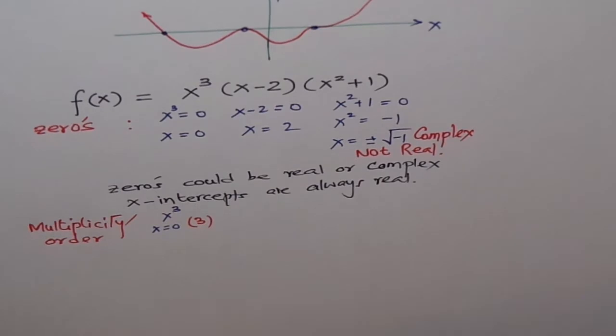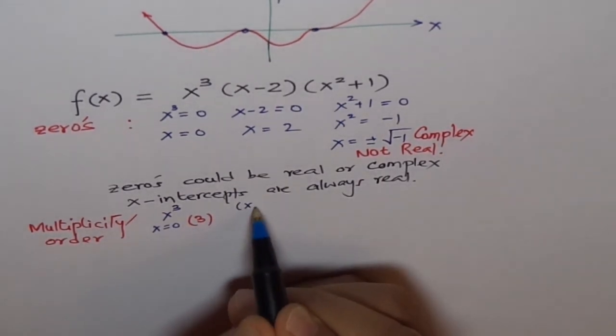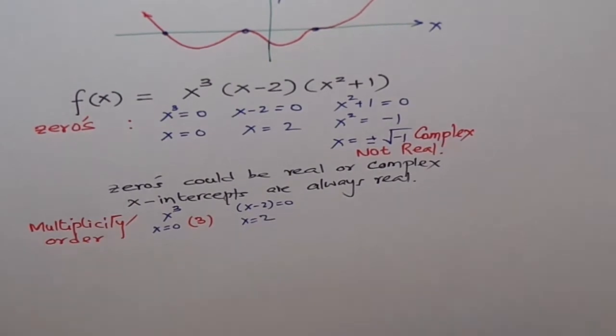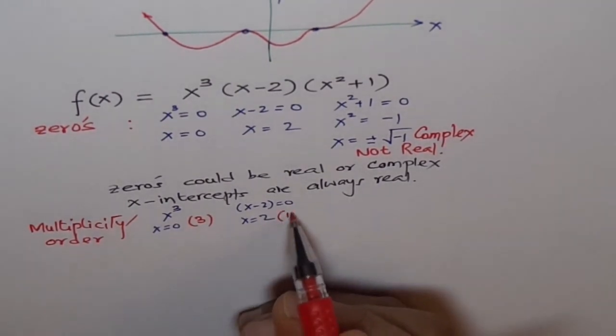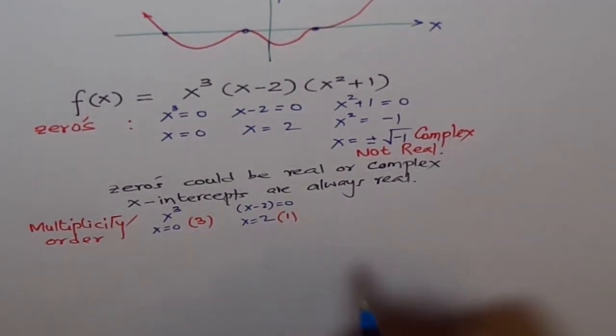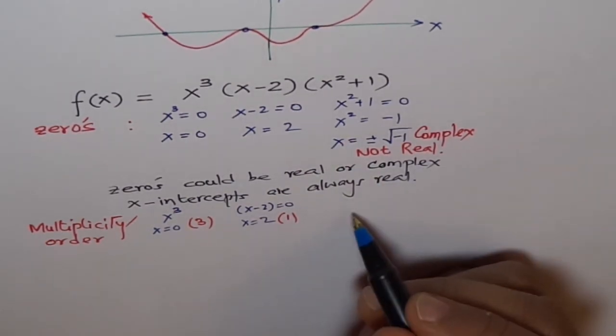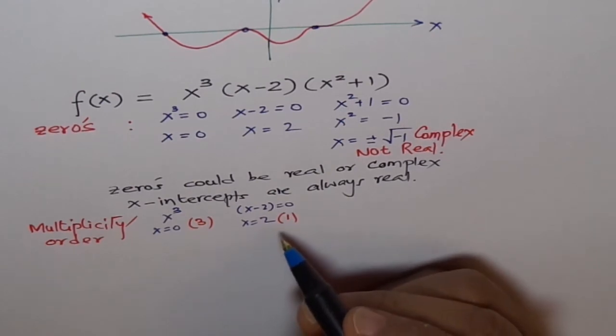For X-2 equals zero, at X equals 2, what is the multiplicity here? One. And for X²+1 it's complex, so no point going there. We will only consider the real zeros to sketch our graph.